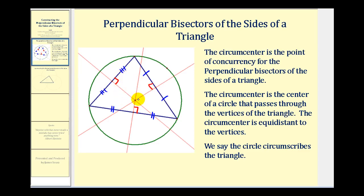Notice how all three perpendicular bisectors intersect in the same point. This point is called the circumcenter. The circumcenter is the point of concurrency of the perpendicular bisectors of the sides of the triangle. The circumcenter is also the center of a circle that passes through the vertices of the triangle — that would be this green circle with its center here. It follows that the circumcenter is equidistant to the vertices. If we drew a segment from this circumcenter to each vertex, notice each segment would be the radius of the green circle. We say that the green circle circumscribes the triangle.